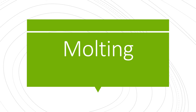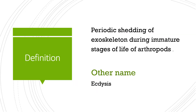Welcome to Biology Articles and MCQs. Today we are going to start a new topic: molting. Molting is a process mainly carried out by many arthropods and insects. They have the habit of shedding or removing their exoskeleton after a specific period of time, and this period relates to their immature stages of life. This shedding or removal of exoskeleton in a specific period of time is called molting.